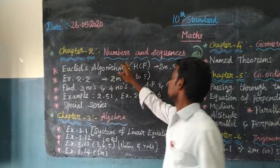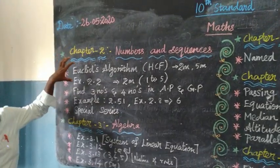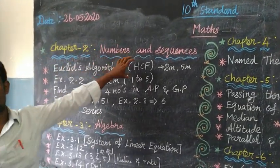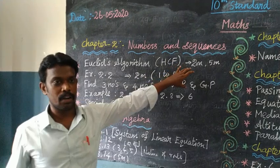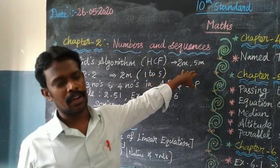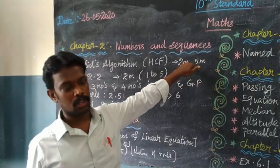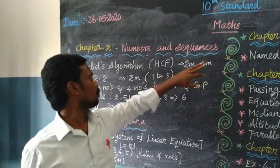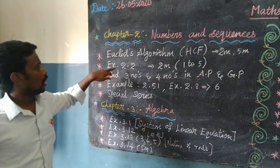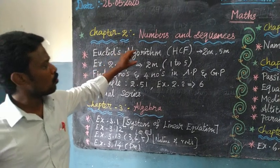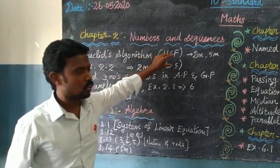Chapter 2: Numbers and Sequences. This is Euclid's Algorithm, the easiest way of solving questions. From exercise 2.2, this is 2 more questions, 1 to 5 questions.